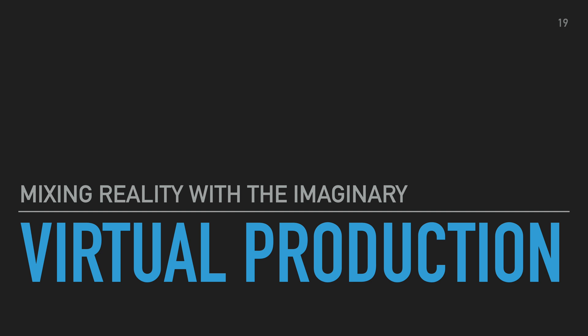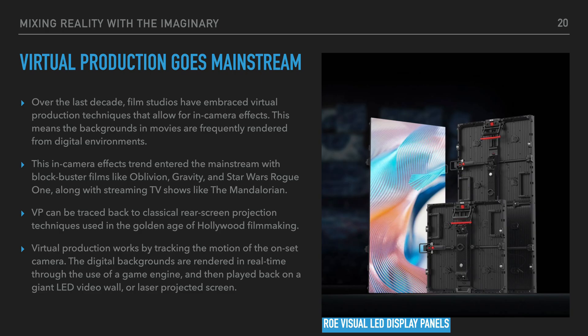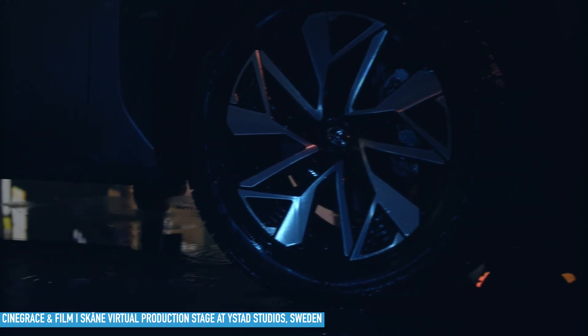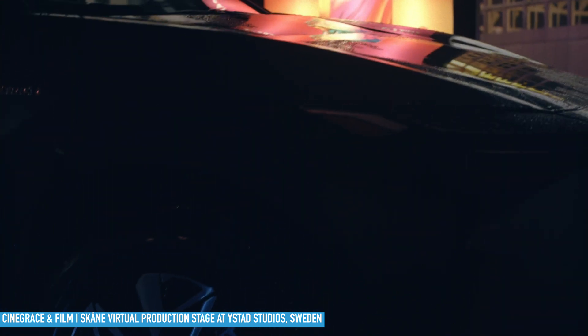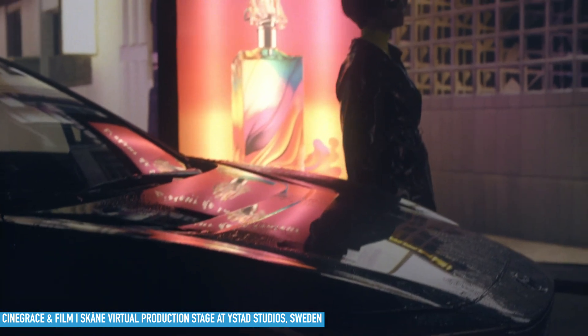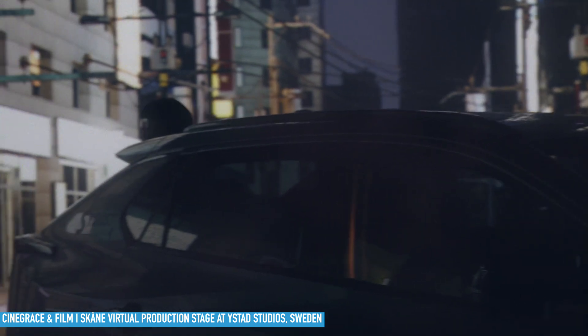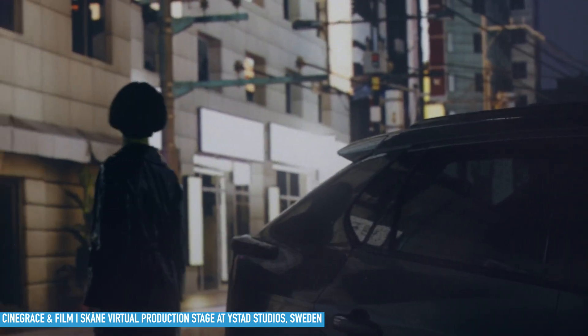Virtual production: Mixing reality with the imaginary. Over the last decade, film studios have embraced virtual production techniques that allow for in-camera effects. This means the backgrounds in movies are frequently rendered from digital environments. The Cinegrace virtual production stage at Istad Studios in Sweden uses laser projectors to create a seamless background for film and TV production. Virtual production works by tracking the motion of the on-set camera. The digital backgrounds are rendered in real-time through the use of a game engine and then played back on a giant LED video wall or laser-projected screen. VP can be traced back to classical rear screen projection techniques used in the golden age of Hollywood filmmaking.